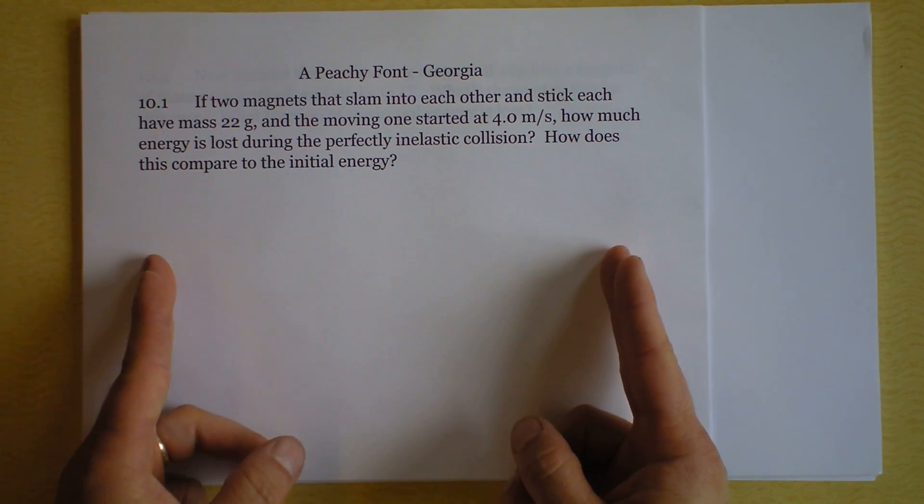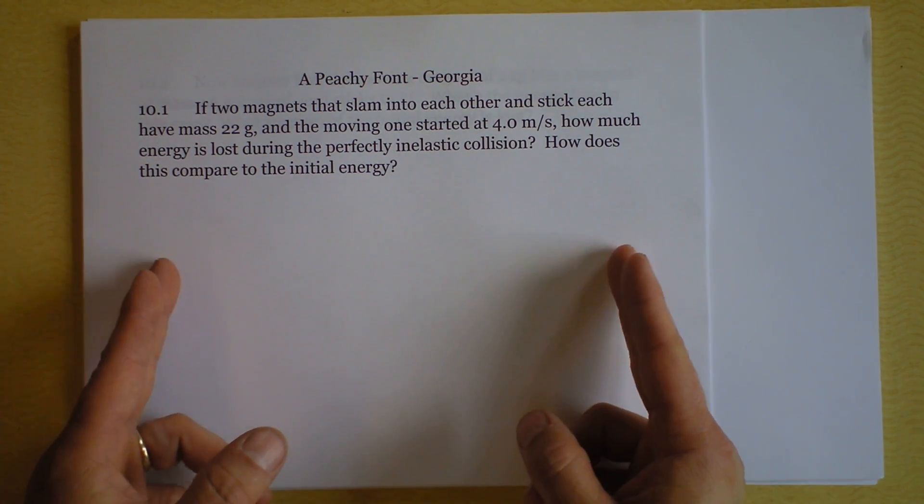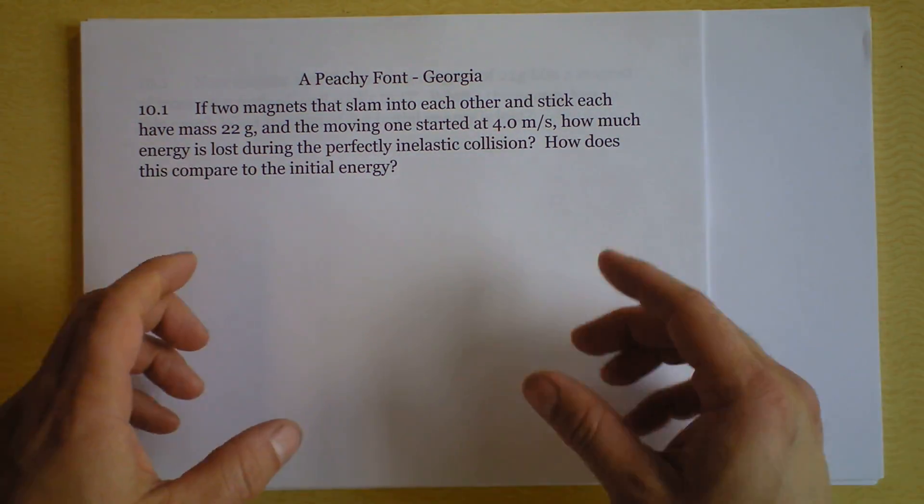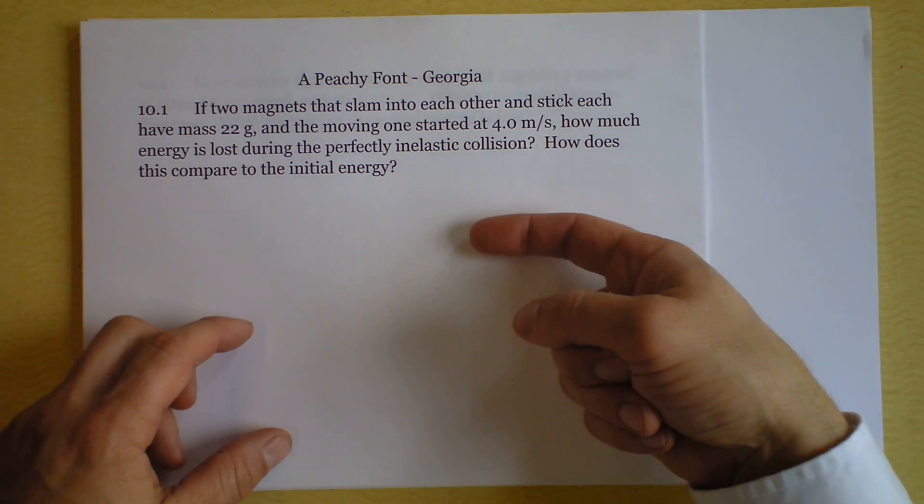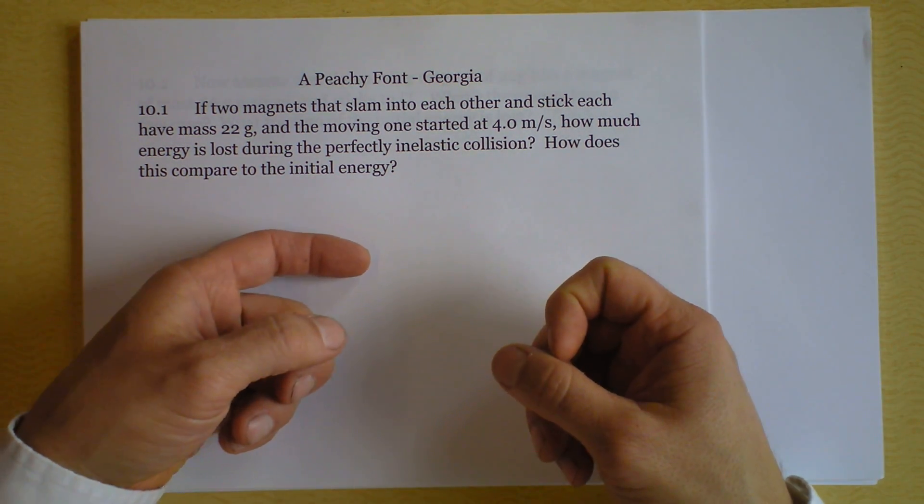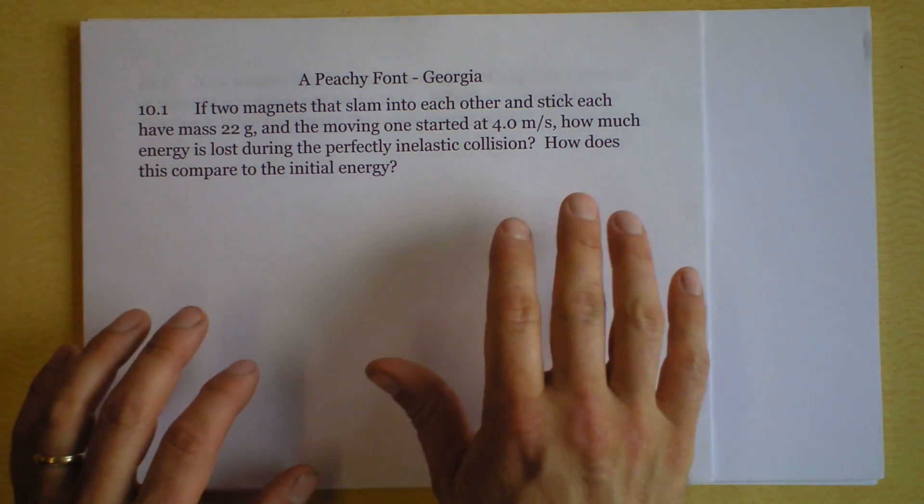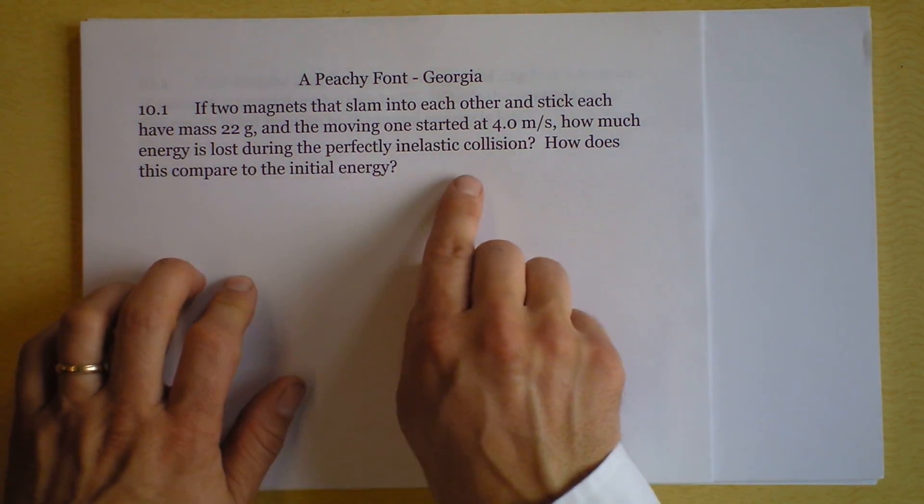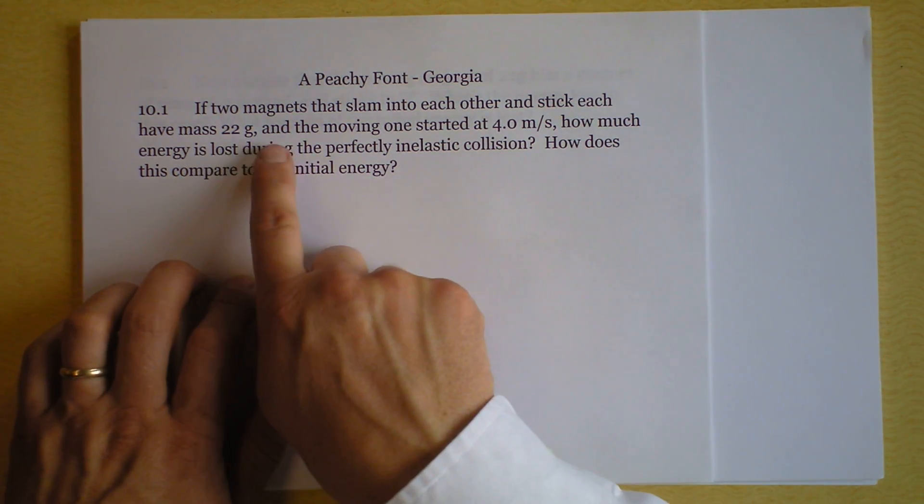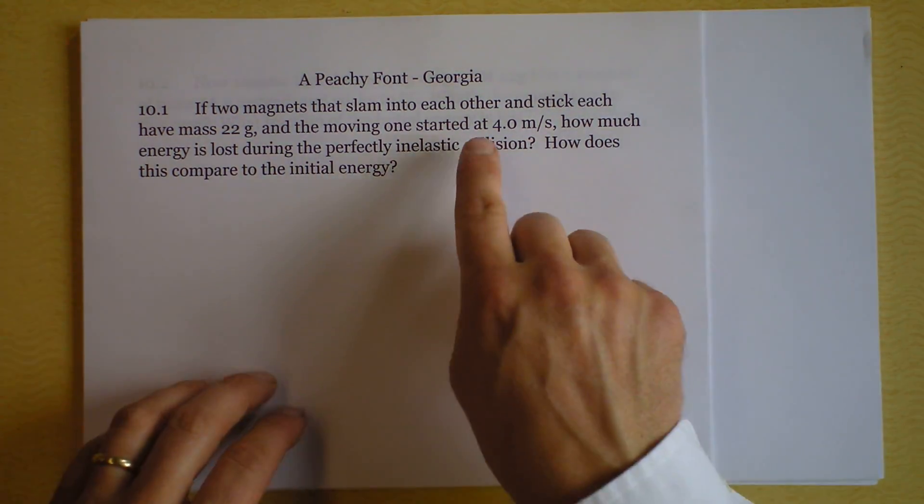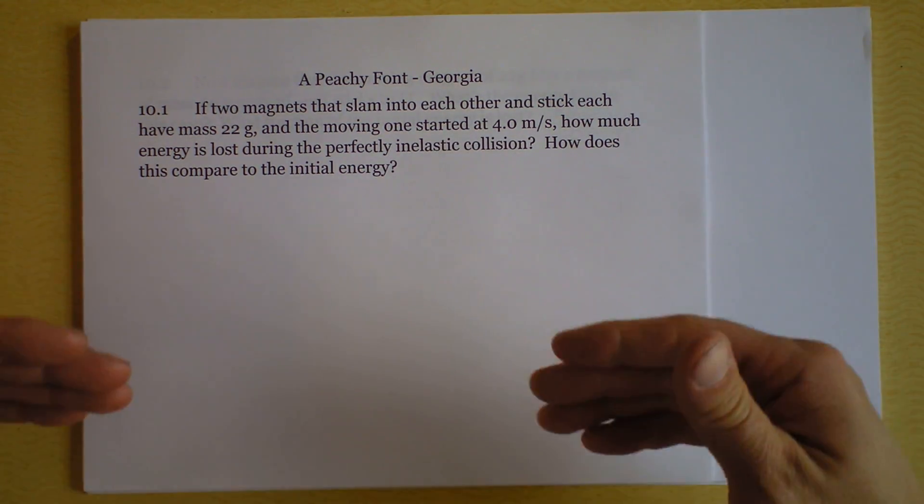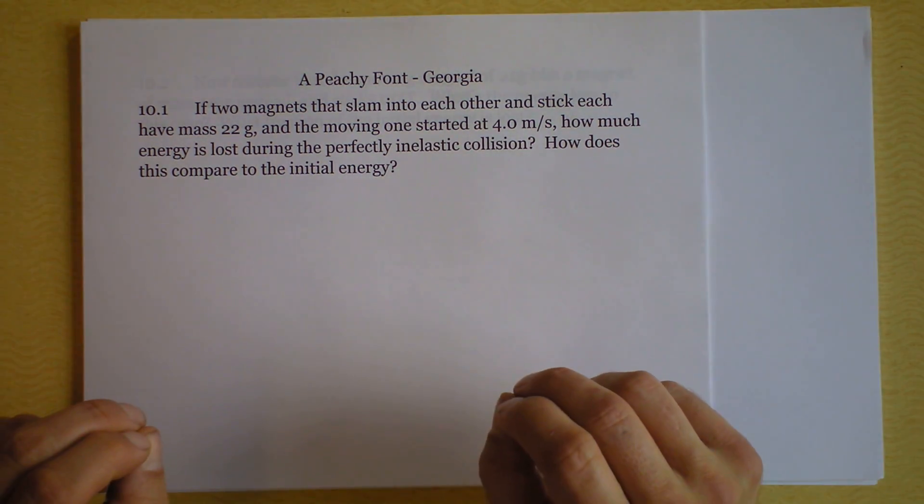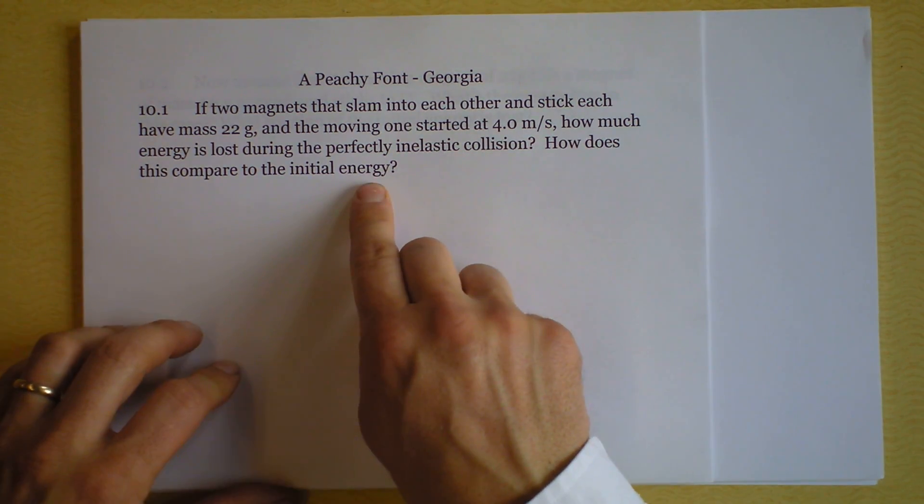But the cool thing is, I think we can neglect that motion entirely because it doesn't affect the system as a whole. It's a leftward force on the right one and a rightward force on the left one. Anyway, I'm asking you to investigate in this first problem how much energy is lost. Because yeah, they're going to end up moving together at two meters per second. But I'm looking for a fraction of the energy that's lost. How does this compare to the initial energy? You can present it as a fraction.